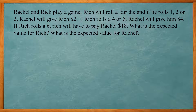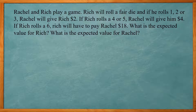In this problem, Rachel and Rich play a game. Rich will roll a fair die, and if he rolls a 1, 2, or 3, Rachel will give him $2. If Rich rolls a 4 or 5, Rachel will give him $4. And if Rich rolls a 6, Rich will have to pay Rachel $18. What is the expected value for Rich, and what is the expected value for Rachel? To find the expected value, we multiply the probability of the event happening times the amount netted. Remember, your net is your winnings minus your cost. In this one, there's no cost to play, so our cost would be zero.